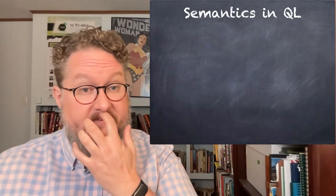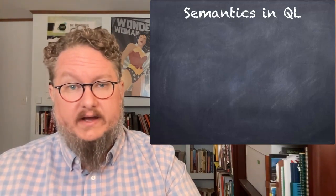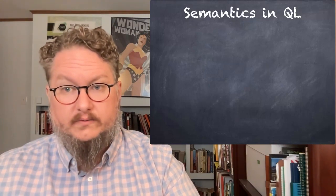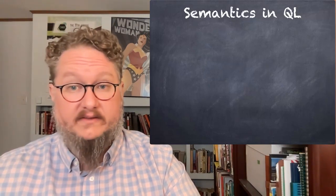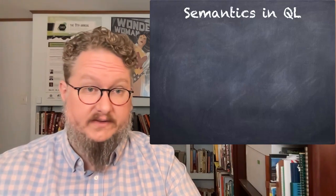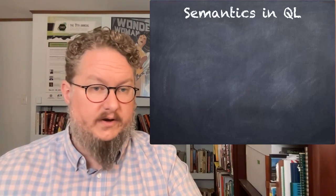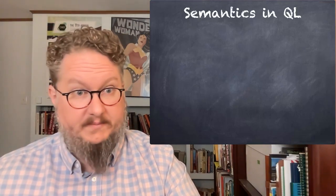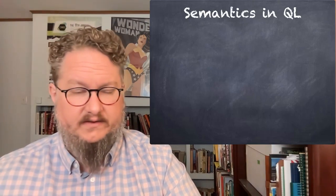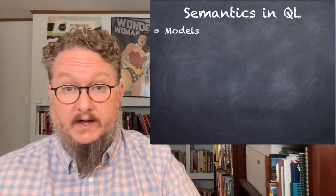That was the semantics of SL. Let's talk about the semantics of QL. Truth tables and ordinary truth value assignments don't work in QL because predicates don't have truth values by themselves, and quantifiers range over a potentially large — even infinite — number of sentences, depending on the size of the universe of discourse. This means there's no simple truth table you can give. Instead, what we use in QL we call models.